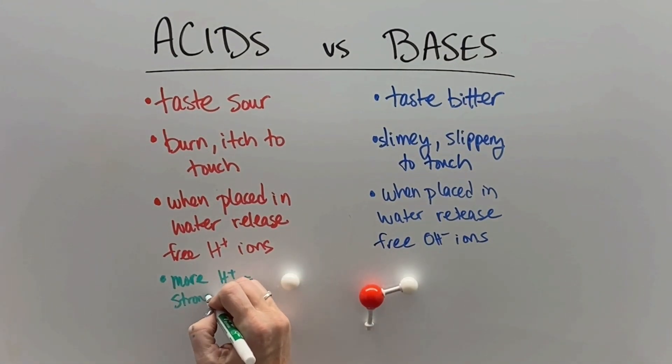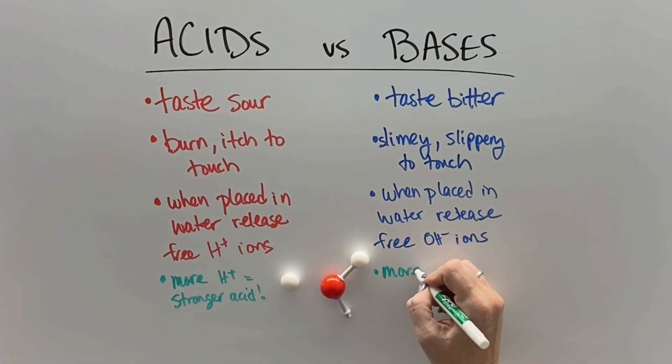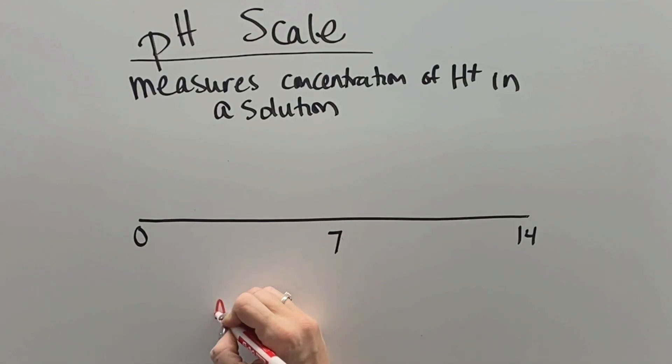So the more free hydrogen ions that you have in a solution, the stronger the acid, and the more free hydroxide that you have, the stronger the base.